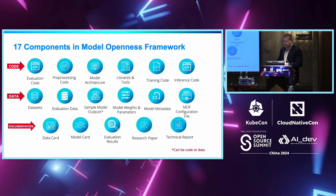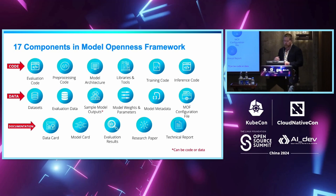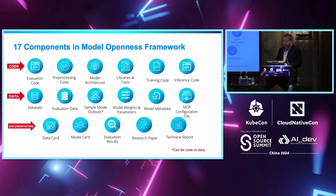Circling back to the 17 components in the MOF: under code, we have the model architecture — the core piece of any distribution when coupled with model weights. There's also data pre-processing code, associated libraries and tools, and training and inference code used to both train the model and run benchmark tests. For data, we have pre-trained datasets, fine-tuned data, or reinforcement learning from human feedback data. We also have model metadata, weights and parameters. On the documentation side, this gives insight into the work done to develop the model — research papers and technical reports.